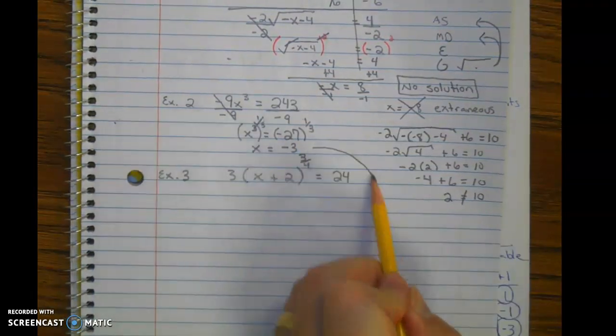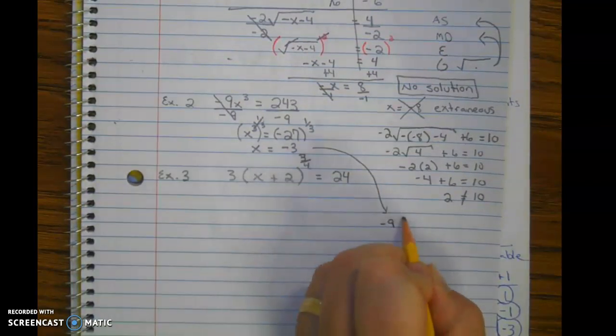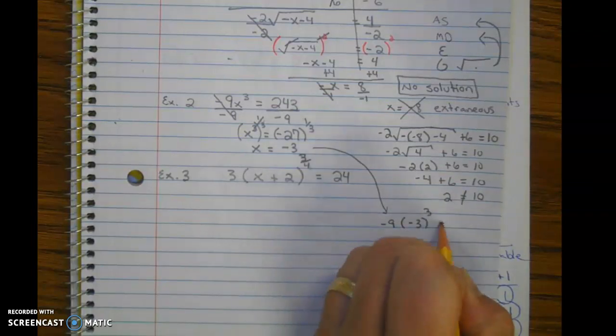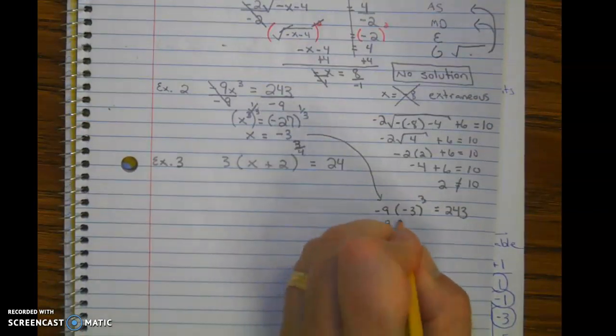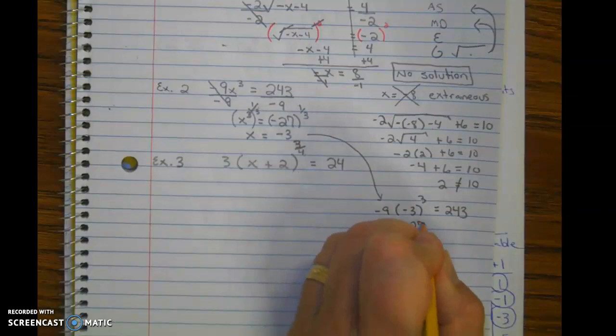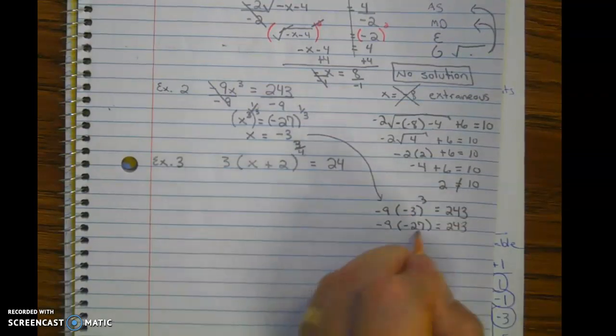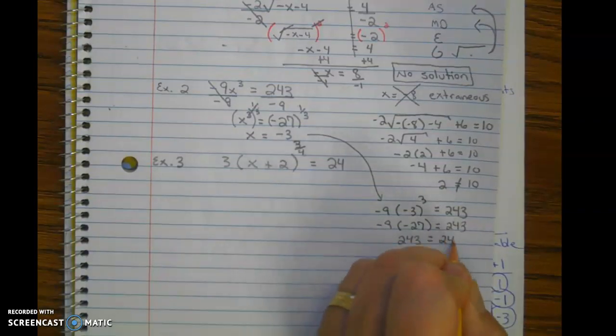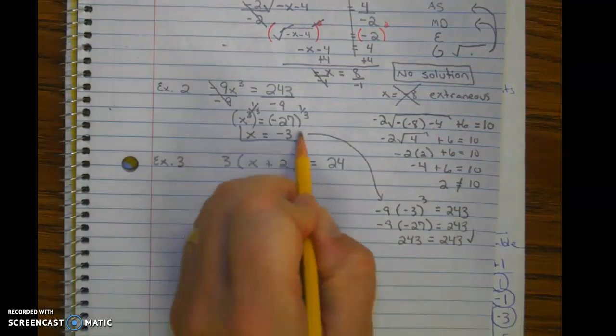So now let's check this answer. Let's go down here and plug it in. We're going to get negative 9 times negative 27 equals 243. And multiplying that, we get 243 equals 243. Checks out. Good answer. Move on.